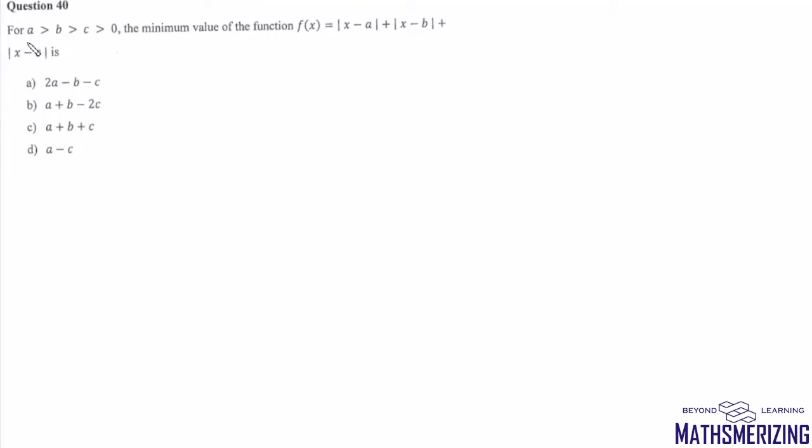Question number 48 says for a greater than b greater than c greater than zero, the minimum value of this function which is f(x) = |x - a| + |x - b| + |x - c|.